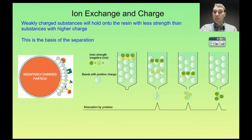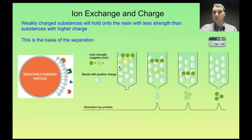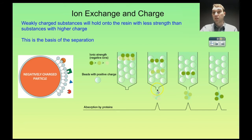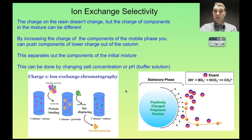This is simplistic for full ionic charges but it also works for proteins — proteins can have levels of charge depending on what amino acids make up the protein, and that can be used to separate them out. The ion exchange resin beads have a positive charge, and the substance with the strongest charge will stick the most, taking the longest to come through the column. The charge of the resin doesn't change but you can change the components you're passing through the column to help separate out the mixtures.